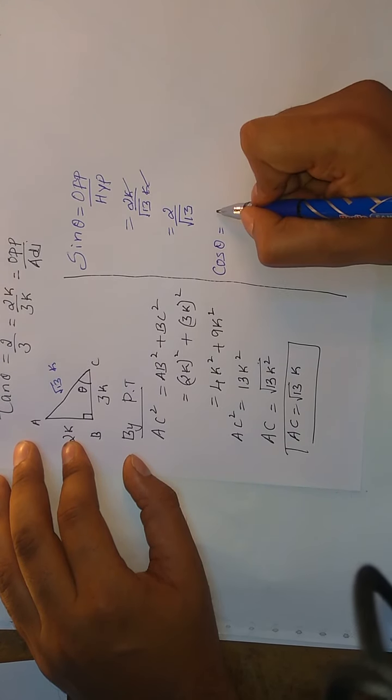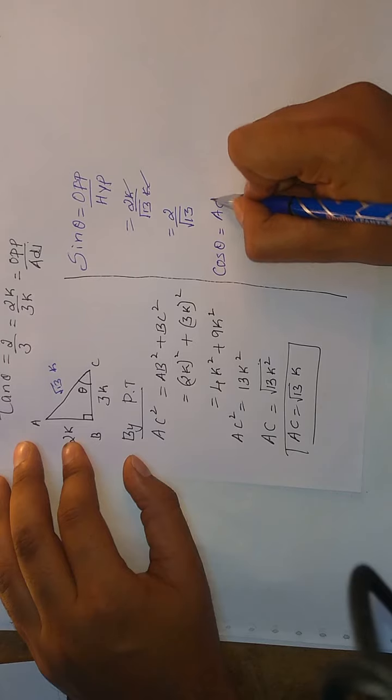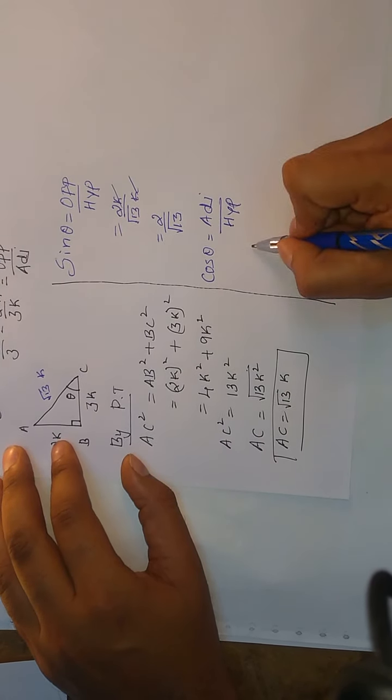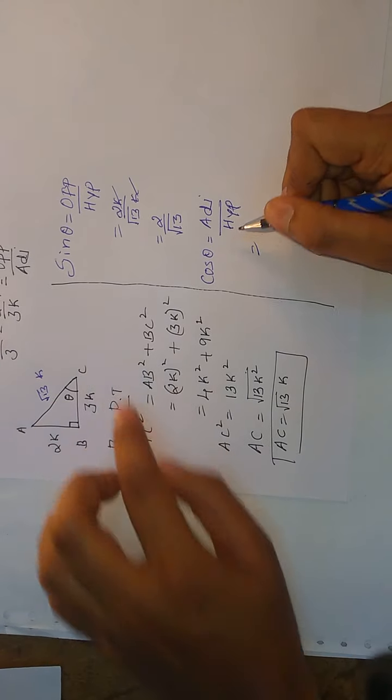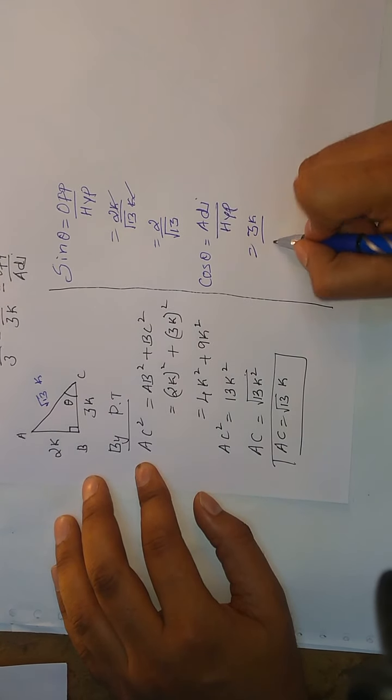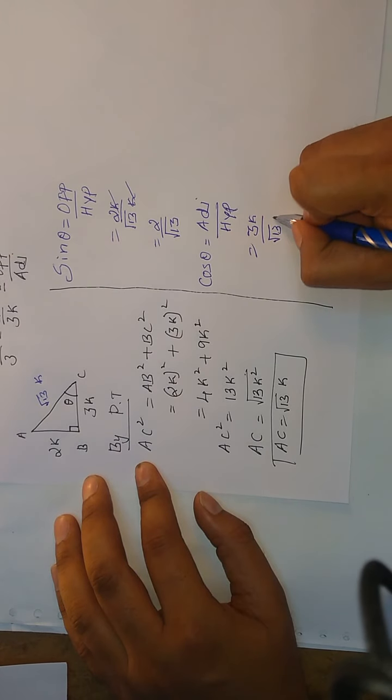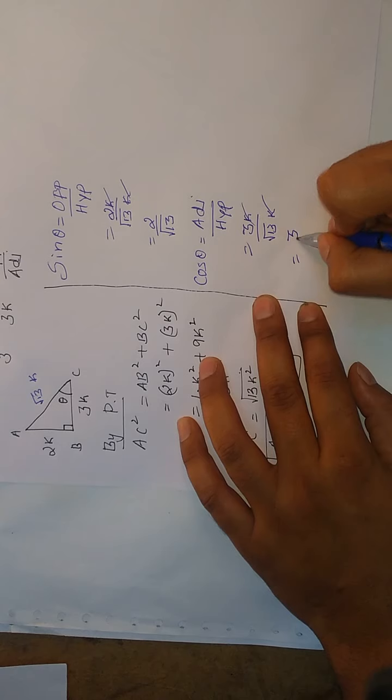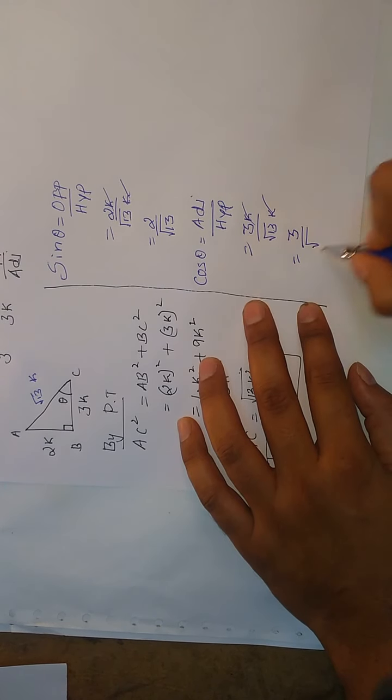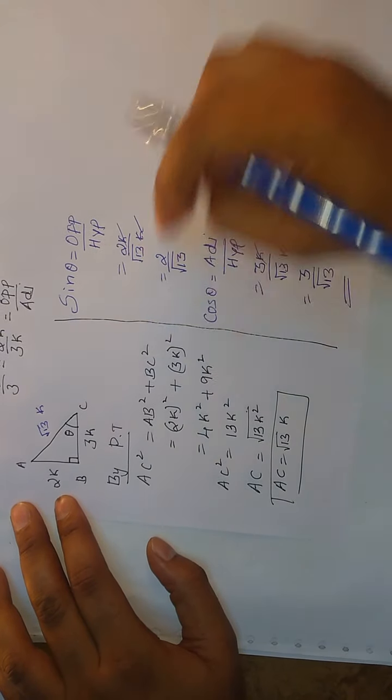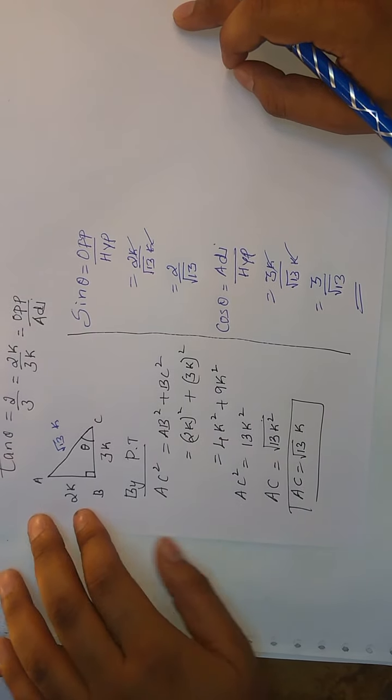Cos θ, cos θ definition is adjacent side by hypotenuse. θ adjacent BC is 3k, hypotenuse is √13k. Again k gets cancelled, so the value of cos θ is 3 by √13.